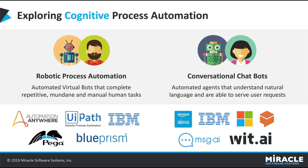The second type is knowledge-based automation, which executes tasks that require human expertise. For example, real-time scenarios like a robot cooking or a robot dancing — these come under knowledge-based automation. Tools for robotic process automation include Automation Anywhere, UiPath, and IBM.